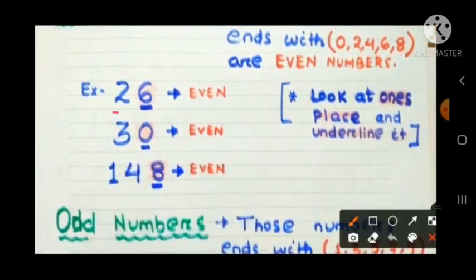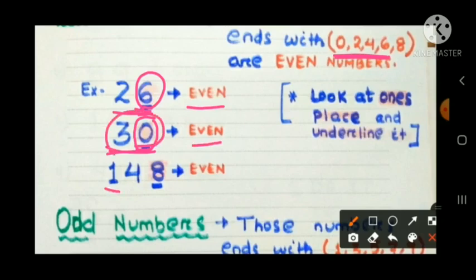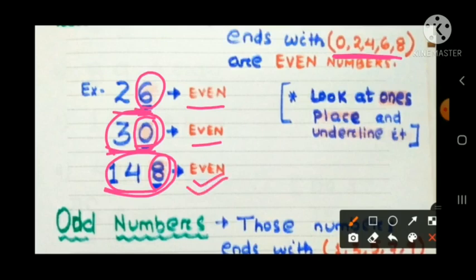Here you can see 26 — in the ones place, 6 is present, which belongs to this group, so 26 is an even number. Now let's check 30 — in the ones place you can see zero, which is also in the group, so 30 is an even number. For 148, 8 is present in the ones place, so 148 is also an even number.